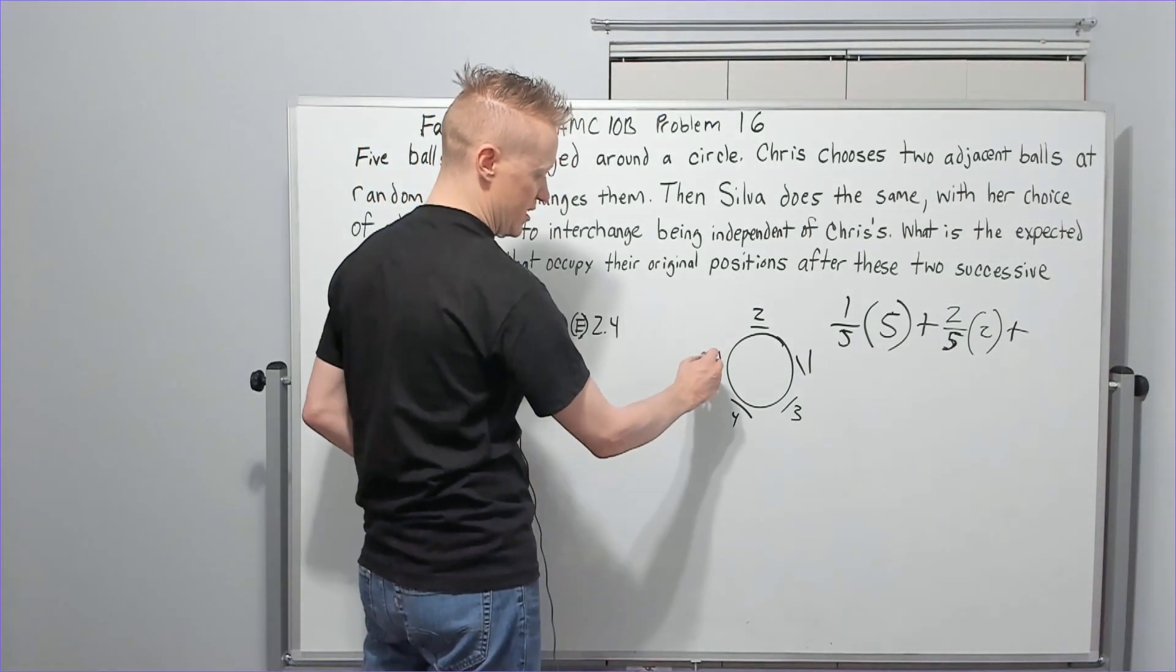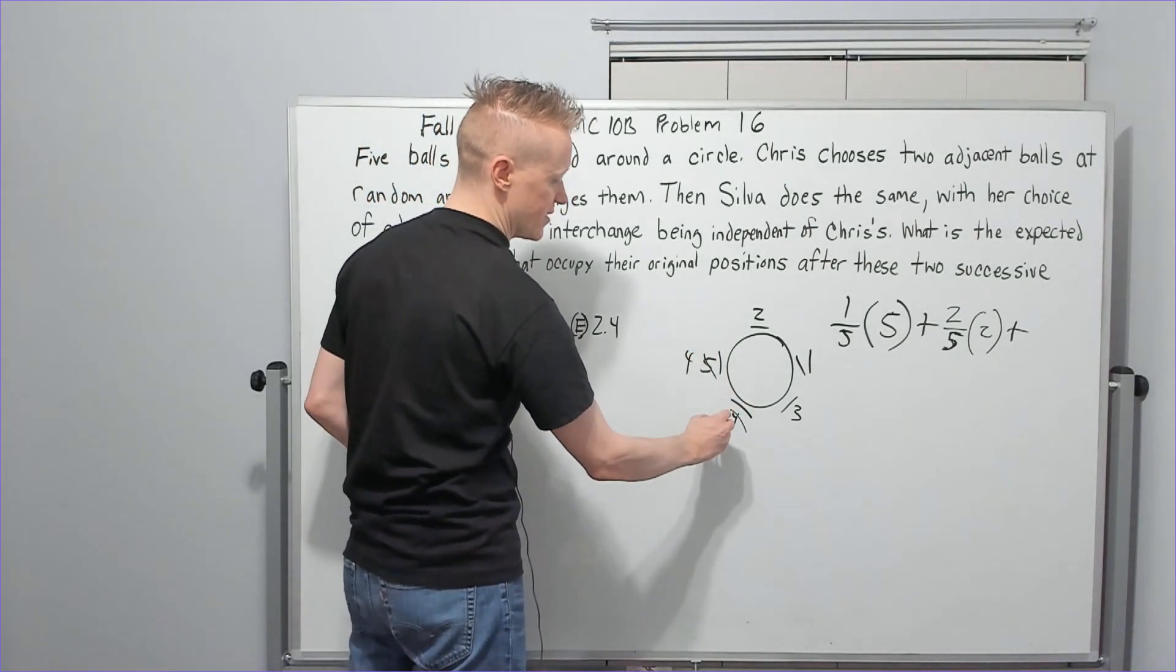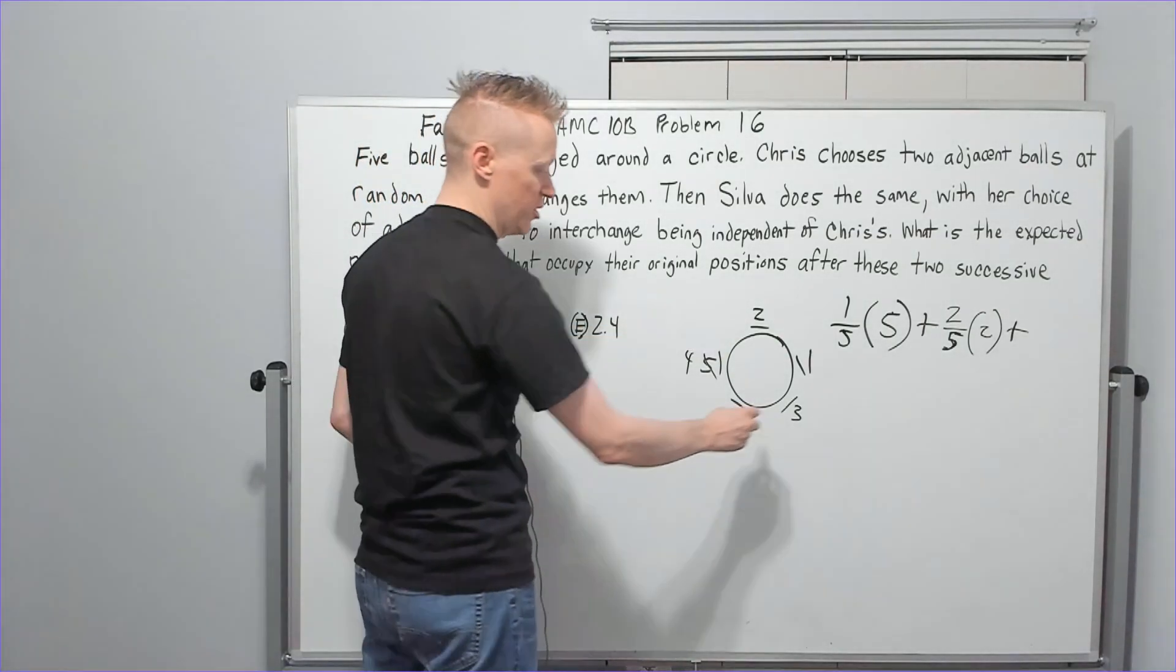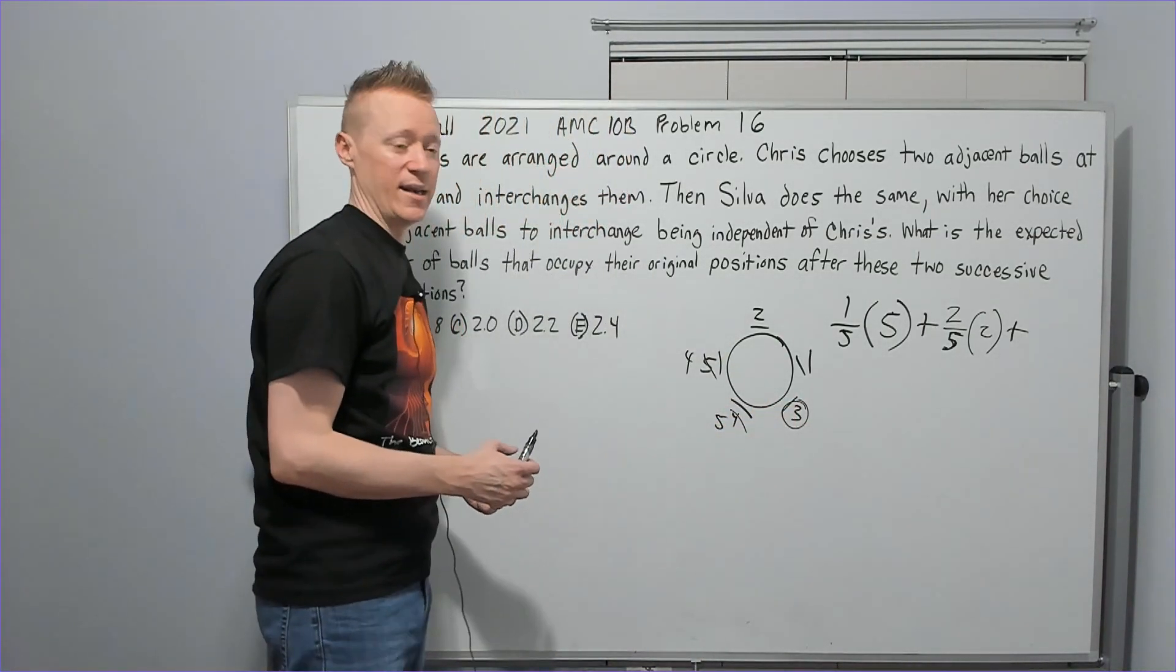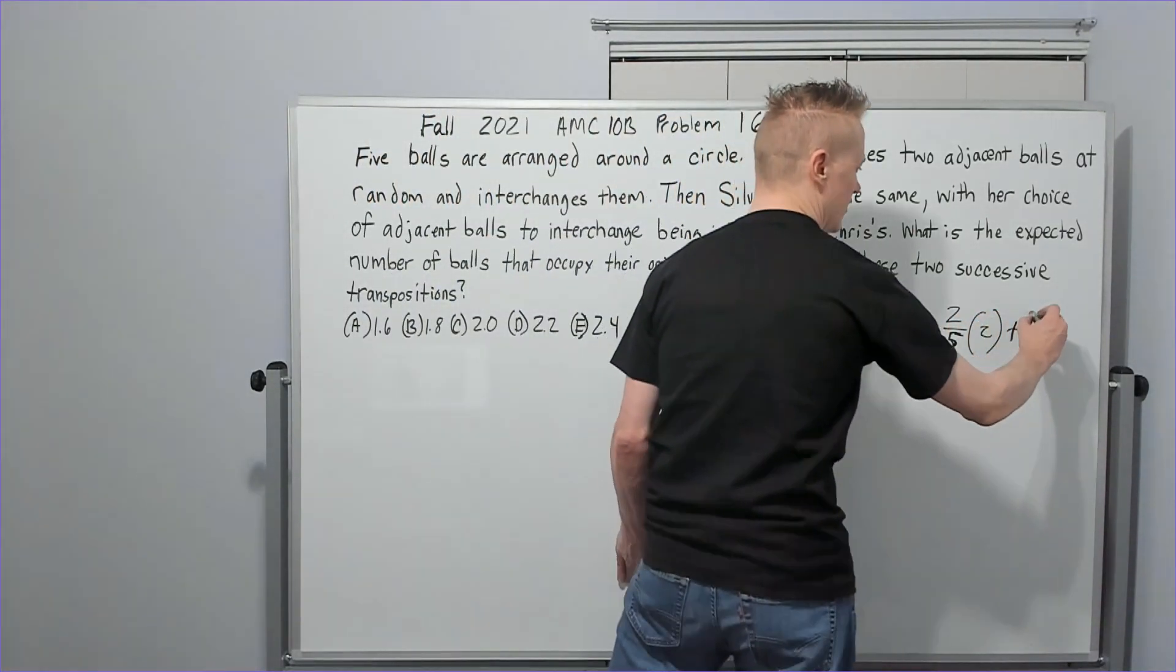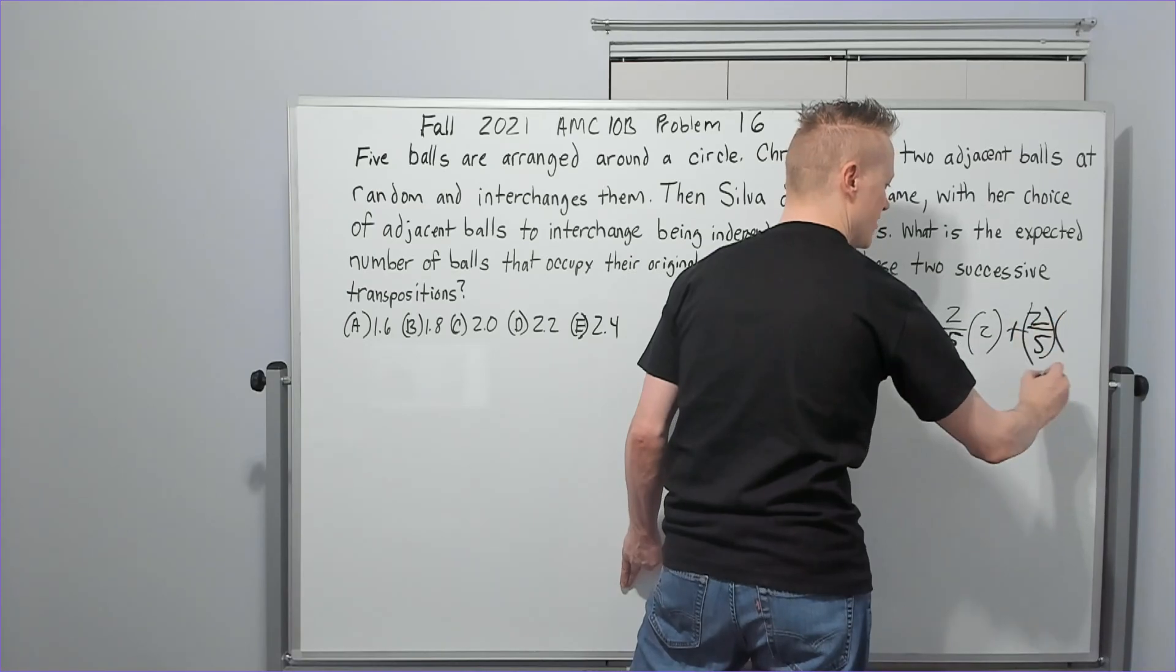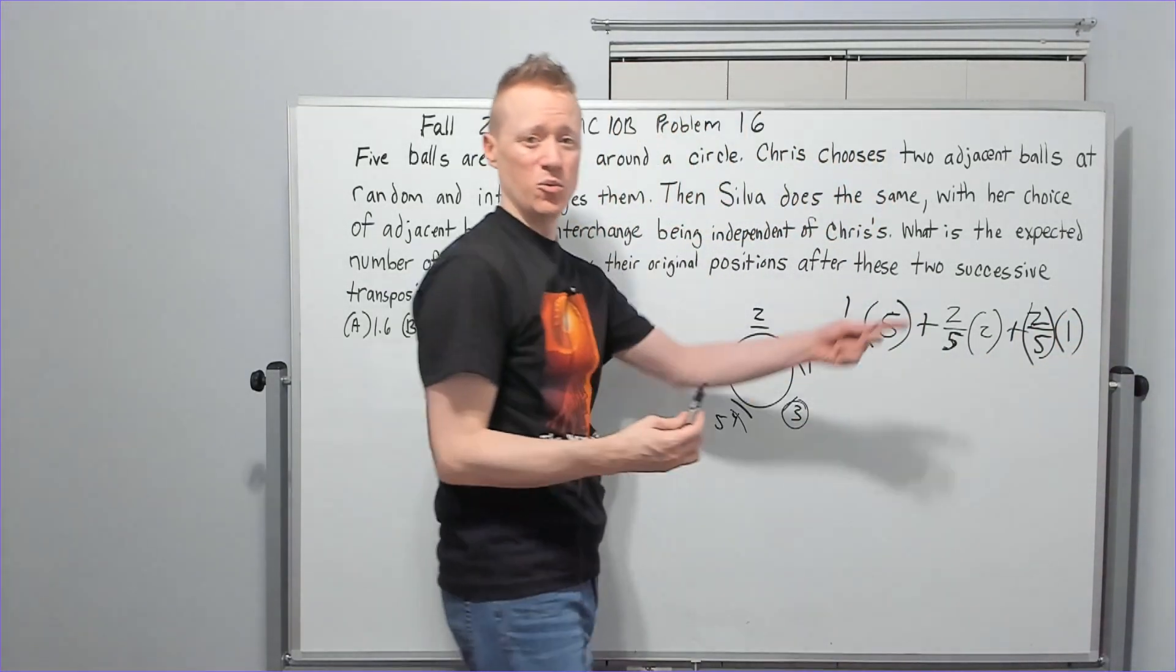If she chooses those, say she switched these, for instance four here and five here. Now how many are in their original place? Only this one, and those are the other two outcomes.